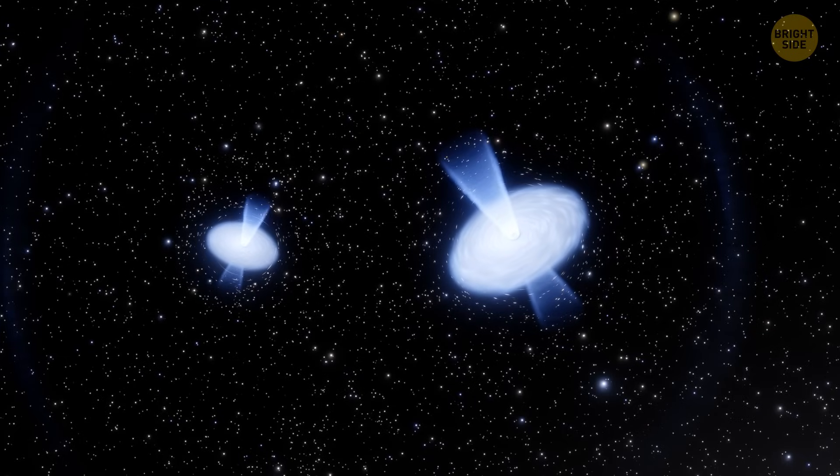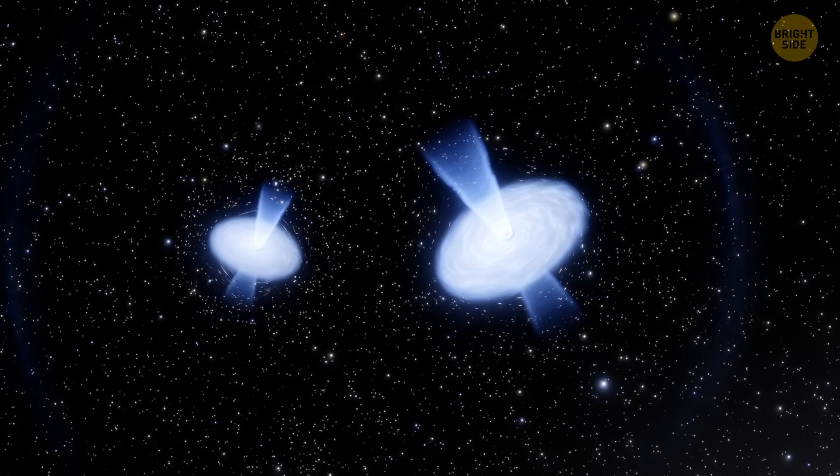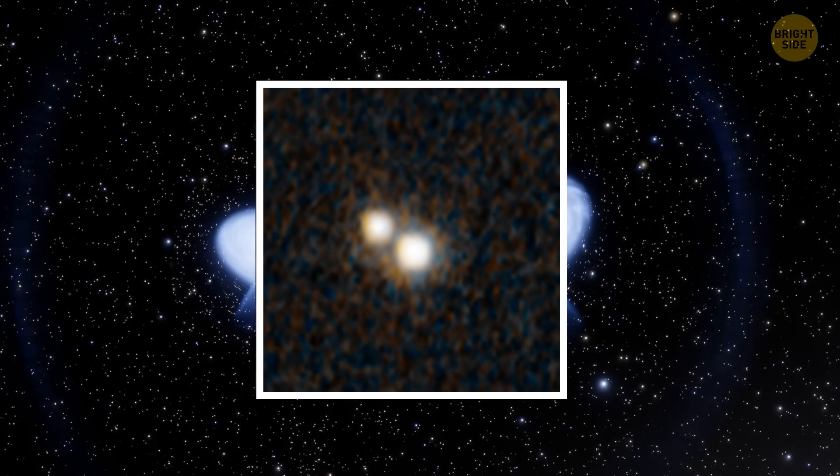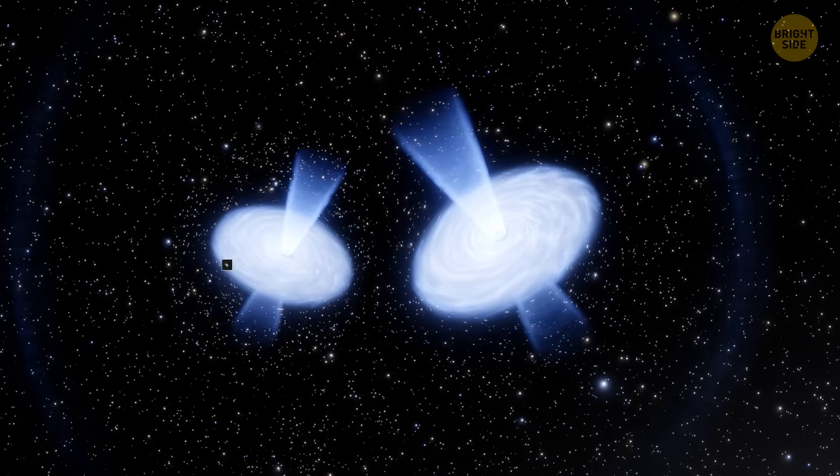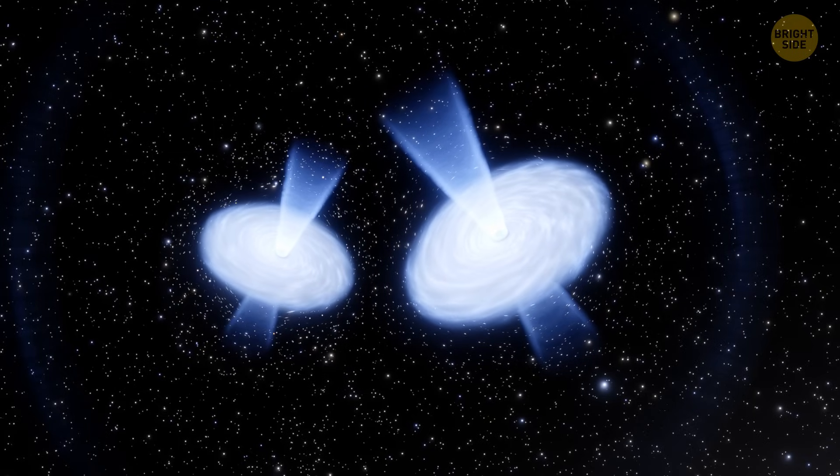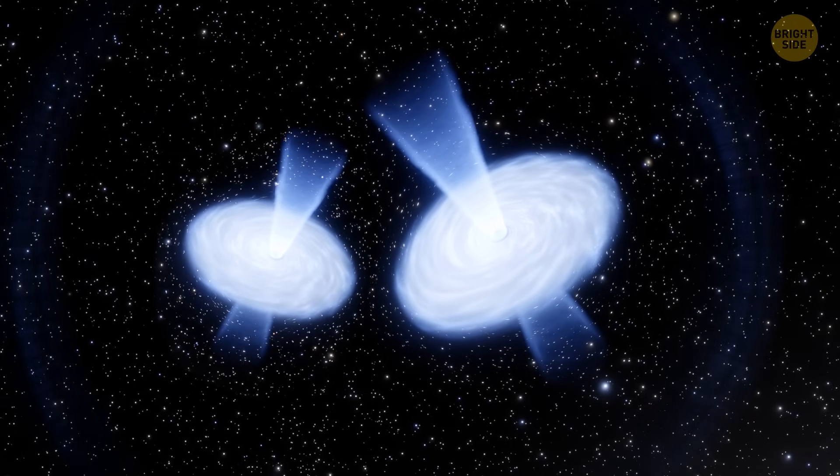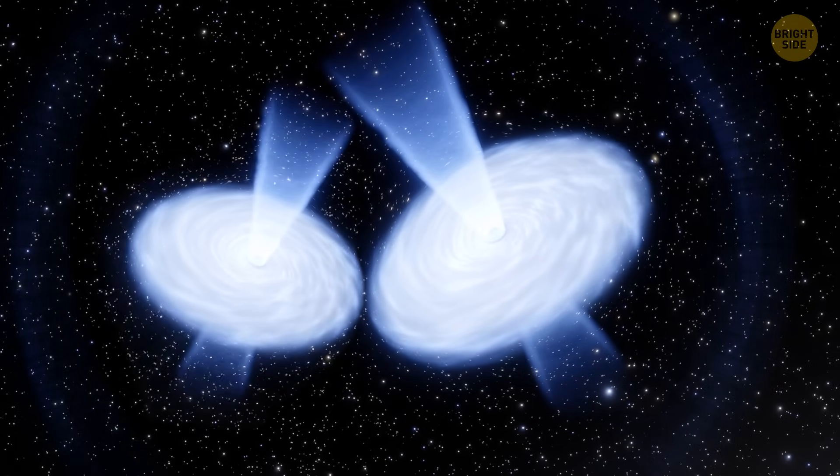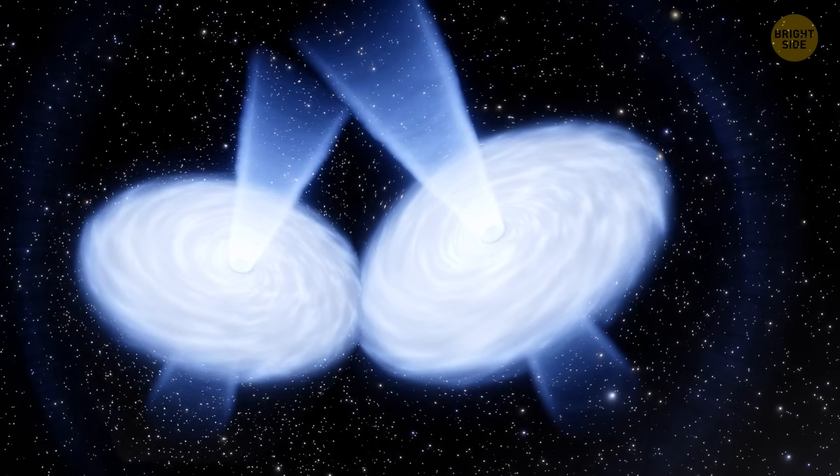The James Webb Telescope has already found a pair of early quasars. That's what we call the bright centers of galaxies, powered by supermassive black holes. It's a curious pair of quasars that are merging, just 900 million years after the Big Bang. This might be the earliest and most distant pair of merging quasars ever found.